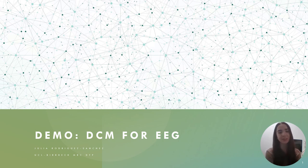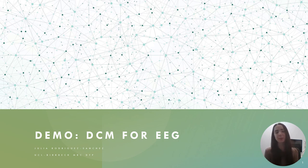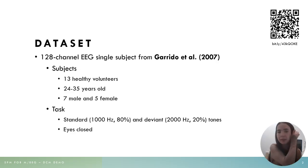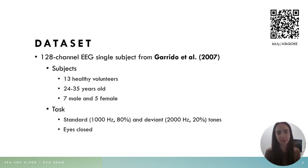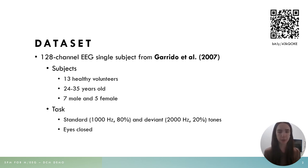Hi, my name is Julia and I'm a PhD student at UCL. I'm going to be doing the DCM demo with you, so this is where you'll put into practice everything that you've learned about DCM for EEG by running perhaps your very first DCM on EEG. We're going to be analyzing 120 channel EEG data from a single subject. This was made available by Marta Garrido and colleagues and can be downloaded from the SPM website using the QR code on the top corner. This dataset is from Marta Garrido's 2007 paper which used DCM to look at mismatch negativity responses in 13 healthy volunteers.